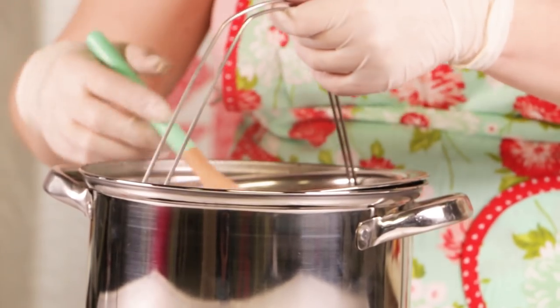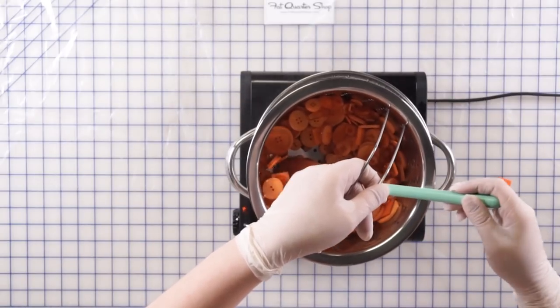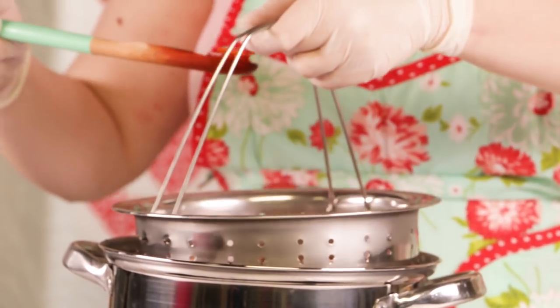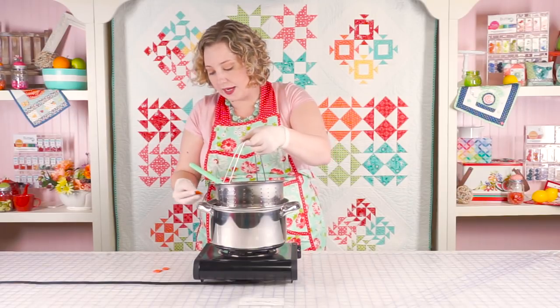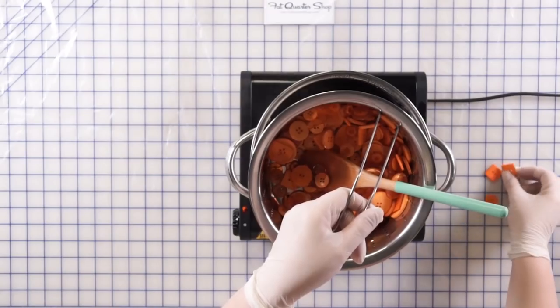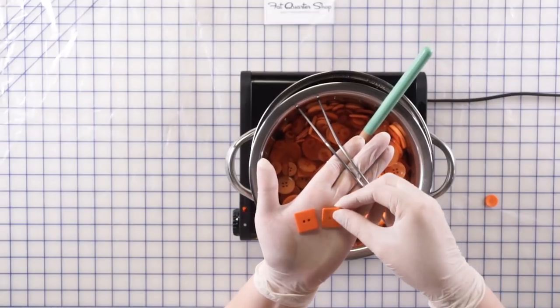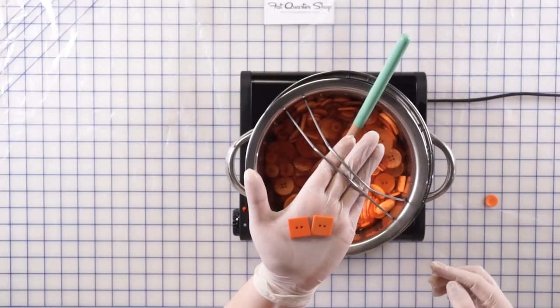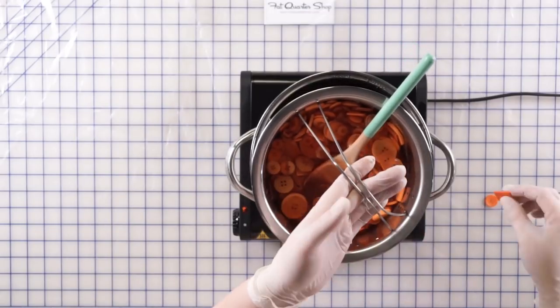All right, so let's pull it up and see how we're doing. I just dry it off a little bit on my apron and then I can compare it to my sample. This is the button that I'm wanting to achieve the color for, and this is the button that I have right now. As you can see, it's a very similar color, it's just not quite dark enough yet, so I would put it back in the pot and keep going.